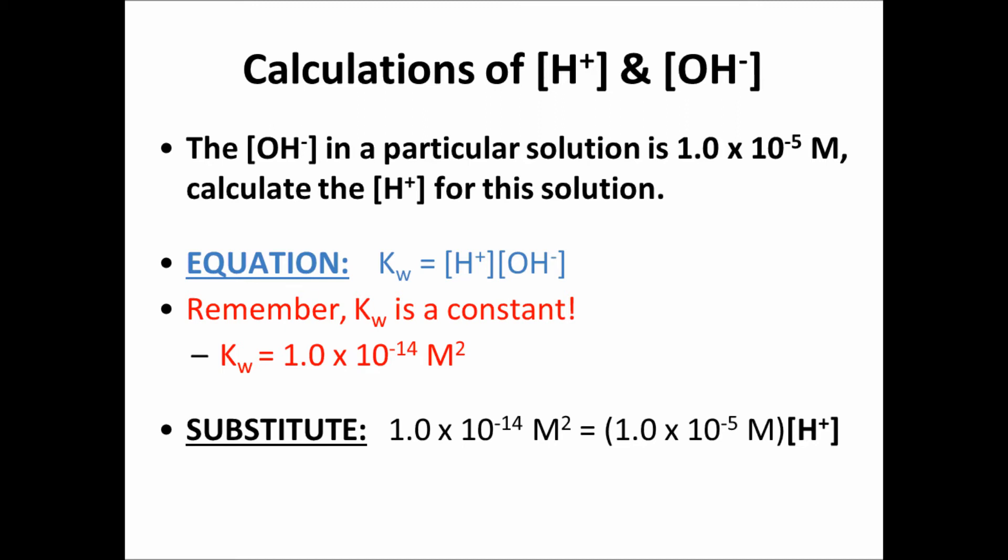We can solve for one variable. Yes, the math looks complicated, but it's actually pretty straightforward. If I want to solve for H plus concentration, I just need to isolate that variable. And if I use my calculator, plug this in, and I'm going to get a value of 1.0 times 10 to the negative 9th molar for my concentration of hydrogen ions in solution.